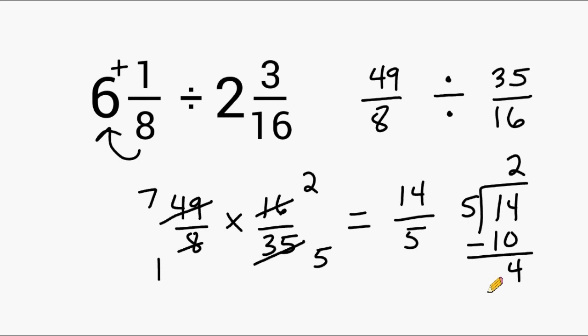Your remainder should be written as a numerator over your divisor which will be your denominator. So our answer can be expressed as 2 and 4 fifths which is our final answer. So 6 and 1 eighth divided by 2 and 3 sixteenths is equal to 2 and 4 fifths.